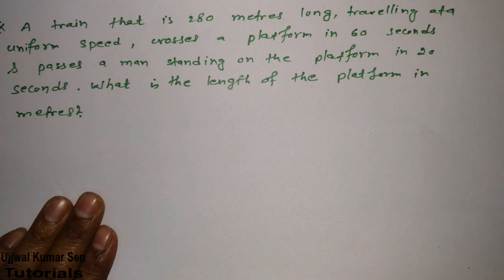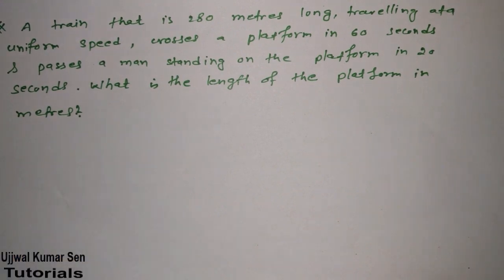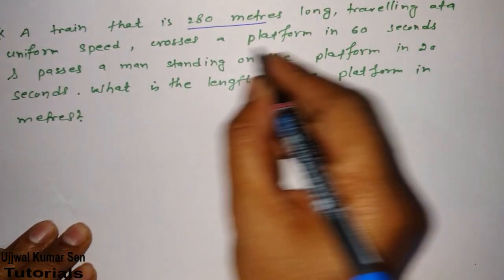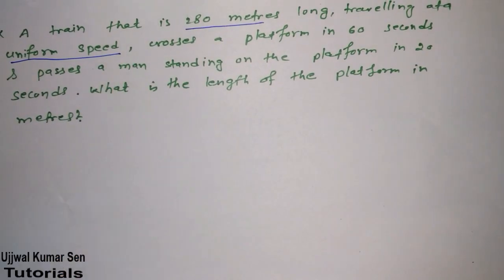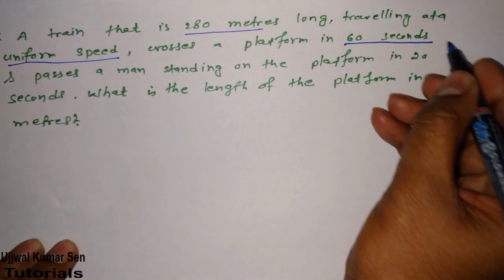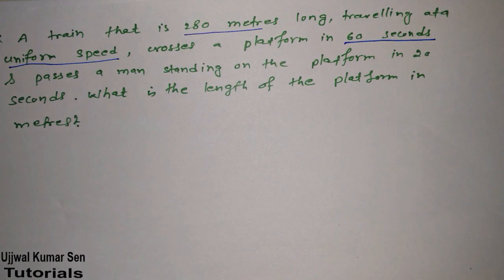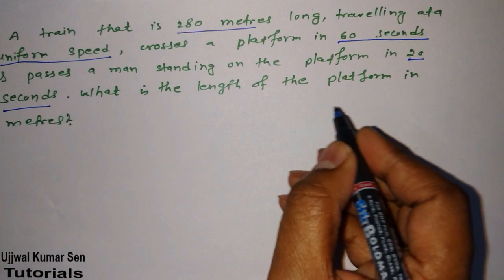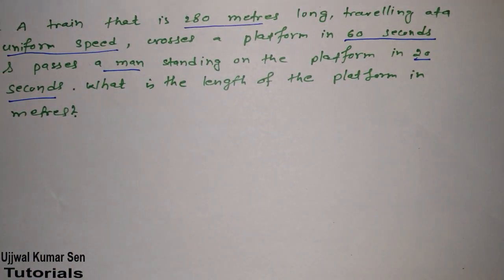First, read the question carefully. We are given that a train 280 meters long is traveling at a uniform speed. It crosses a platform in 60 seconds, and it passes a man standing on the platform in 20 seconds. We need to find the length of the platform in meters.